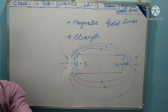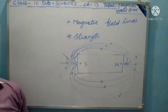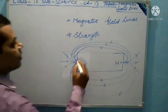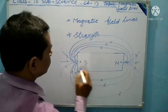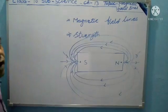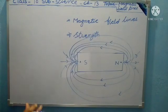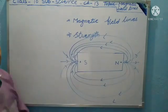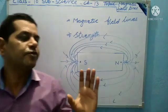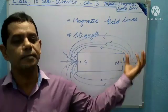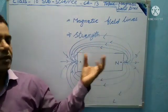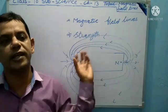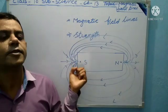The magnetic field lines form closed curves. These lines emerge from the North pole and merge into the South pole — meaning they generate from the North pole and merge into the South pole, forming a closed curve.